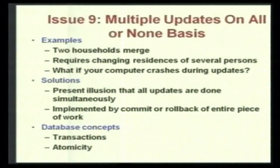We were discussing some issues in the last lecture, so we continue here. Suppose you have multiple updates on an all-or-none basis — for example, changing the addresses of several persons. Now, if in the middle of the update the computer crashes, you will have inconsistent information. The solution is to give the user the illusion that all updates are occurring simultaneously.